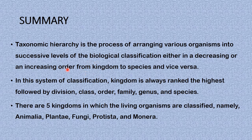To summarize: taxonomic hierarchy is the process of arranging organisms into successive levels of biological classification, either decreasing from kingdom to species or increasing from species to kingdom. Kingdom always ranks the highest, followed by division, class, order, family, genus, and species. In some systems the domain is the highest rank. In the five-kingdom classification we have Animalia, Plantae, Fungi, Protista, and Monera. In the six-kingdom classification, Monera is split into Archaea and Eubacteria.